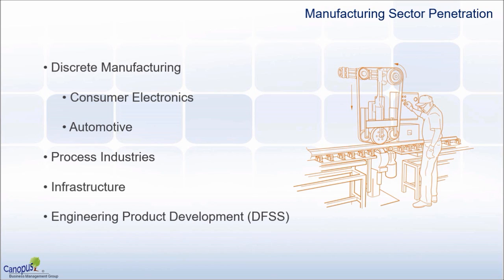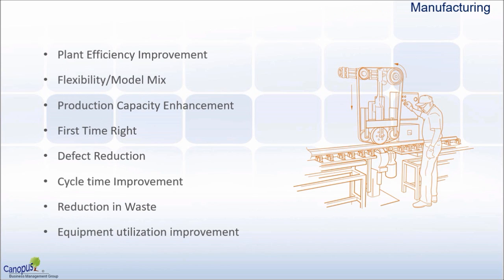In particular, in discrete manufacturing, consumer electronics and automotive sectors have deeply used Six Sigma for various projects and improvements. Some of the popular projects in manufacturing include aspects such as plant efficiency improvement and improvement in flexibility — that means model mix, whether you are able to produce multiple models on the same day.